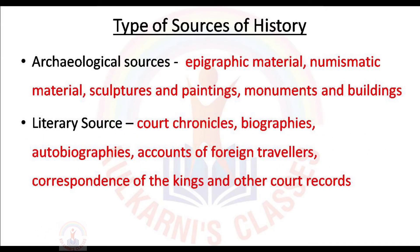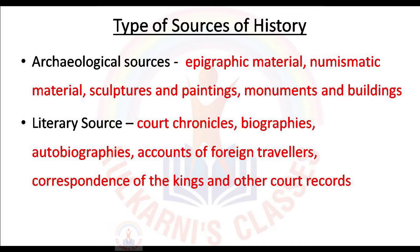There are two types of sources of history. First, archaeological sources, and second, literary sources. Archaeological sources include epigraphic material, numismatic material, sculpture, paintings, monuments, and buildings.